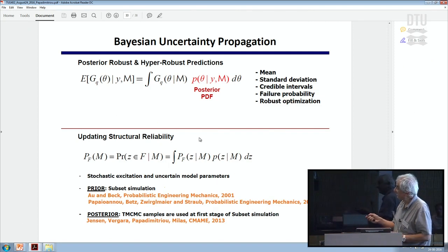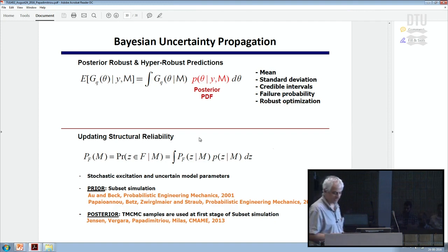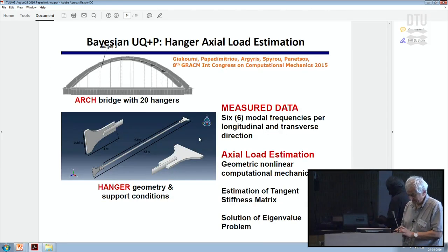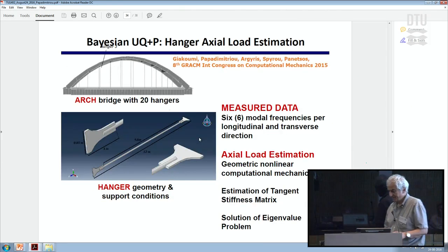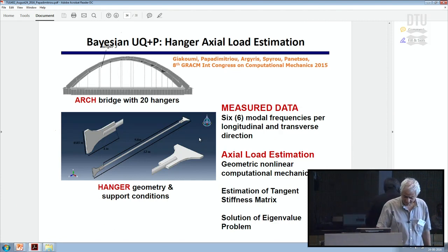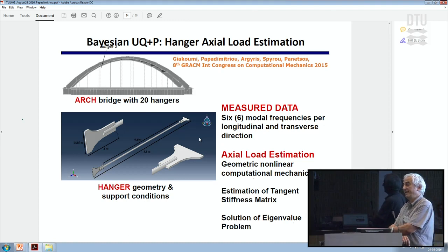The structural reliability problem involves uncertain structural parameters as well as loading parameters if the load is stochastic — so there are two sets of parameters to work with. The final application I will present is Bayesian estimation and model selection for estimating the tension in hangers.